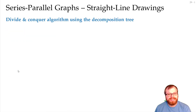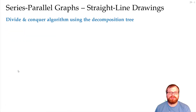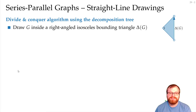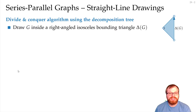How can we do this? We again want to use the divide and conquer algorithm and make use of the decomposition tree that we just defined. Our goal is that at every step we want to draw the graph G inside a right-angled isosceles bounding triangle.